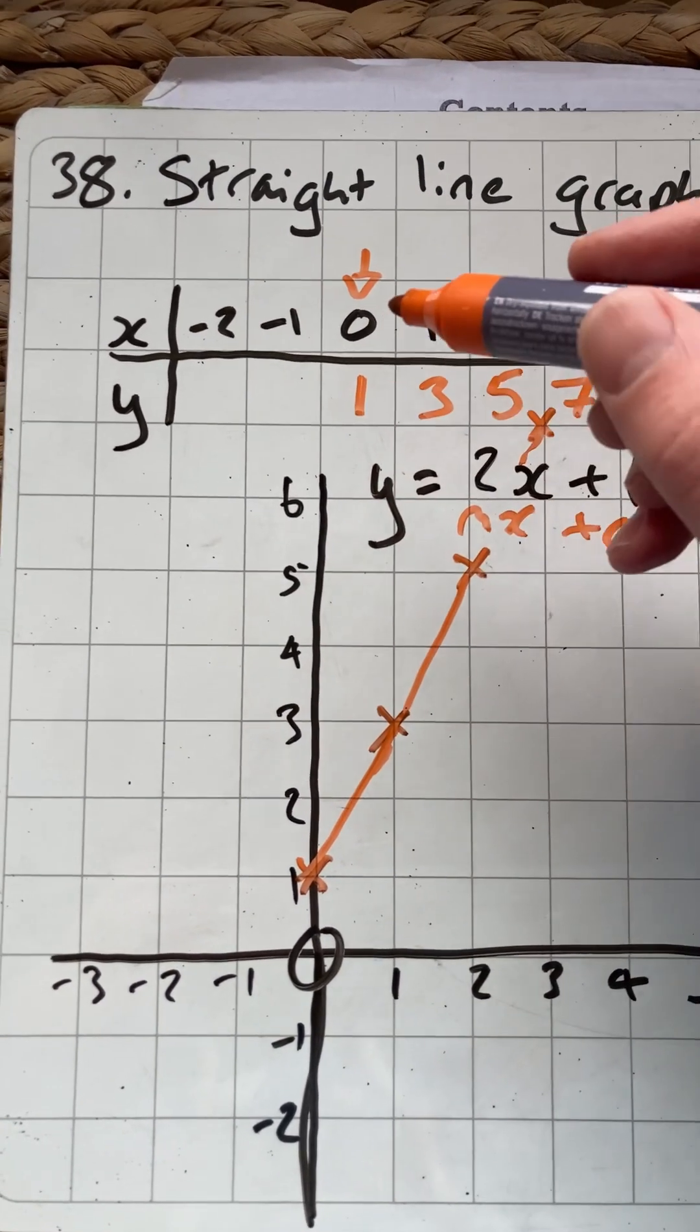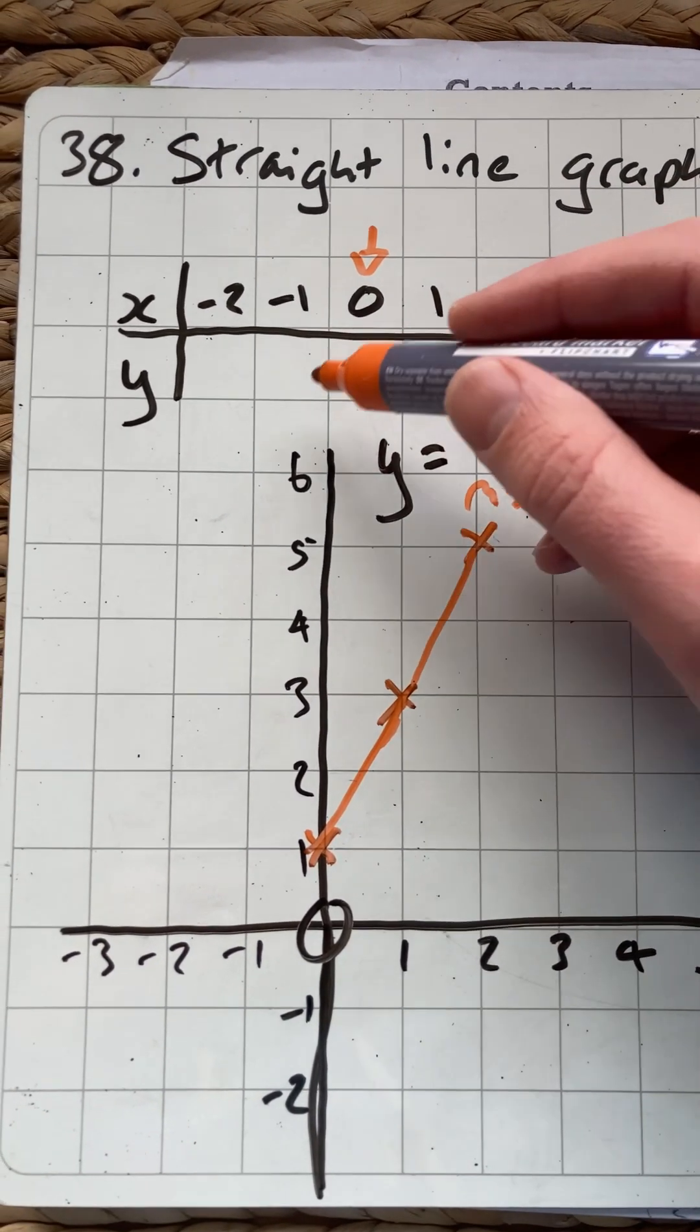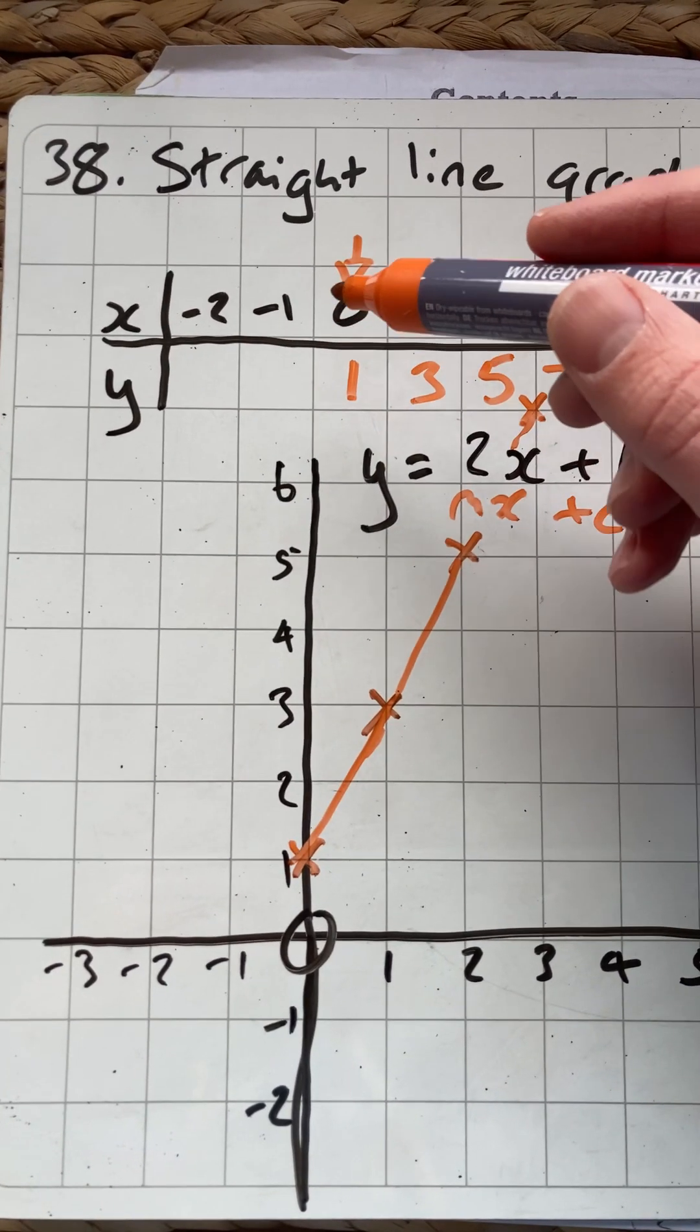That would give us some marks. We haven't completed the table, but this should give us an idea. We're going to subtract 2 each time going that way, or use substitution again.